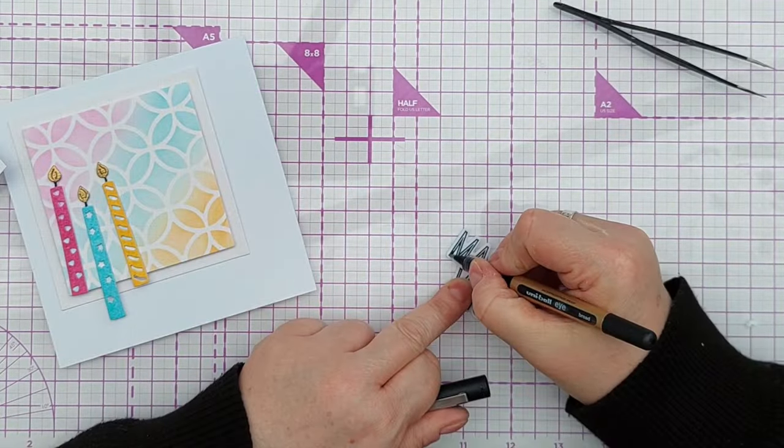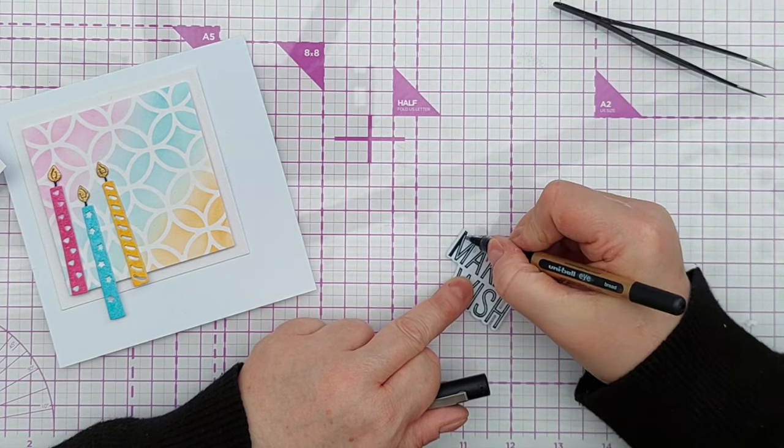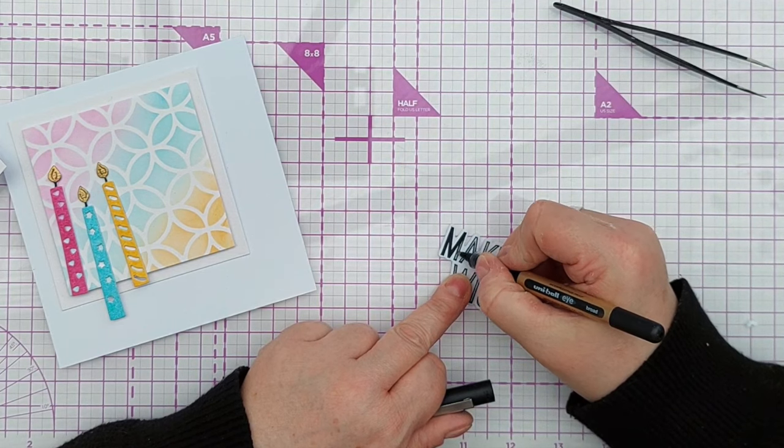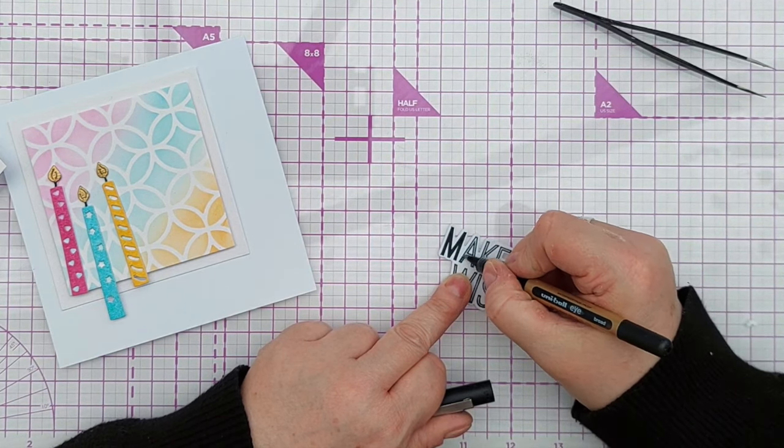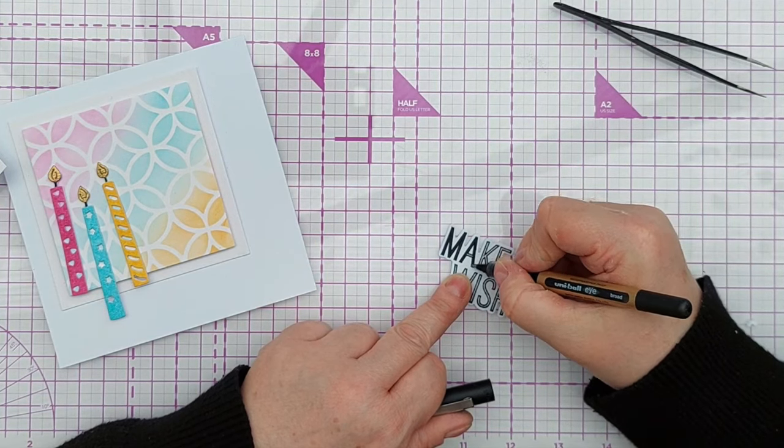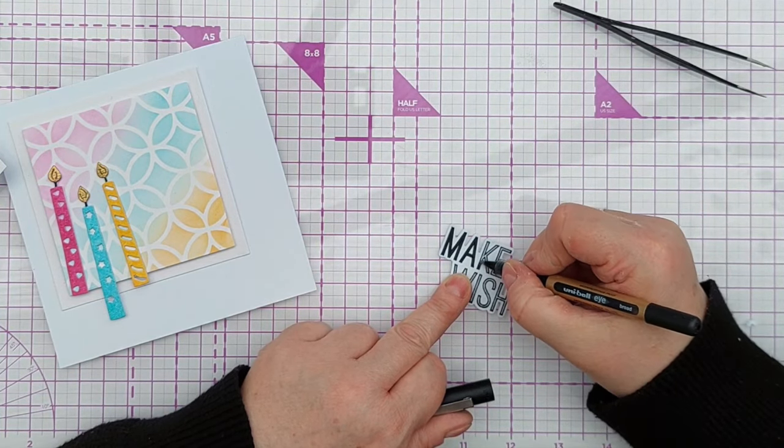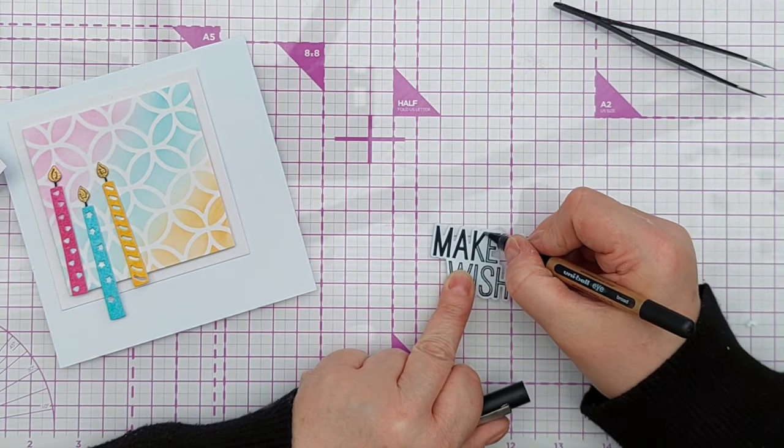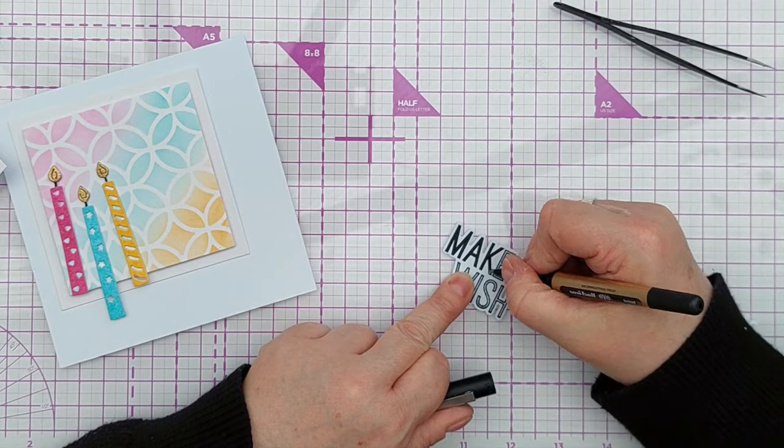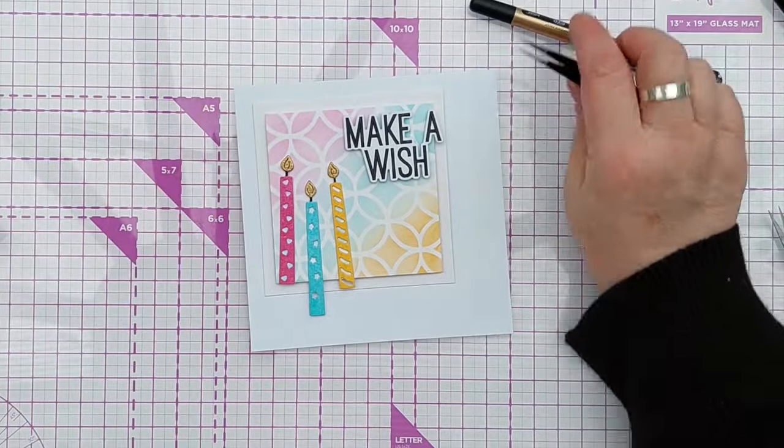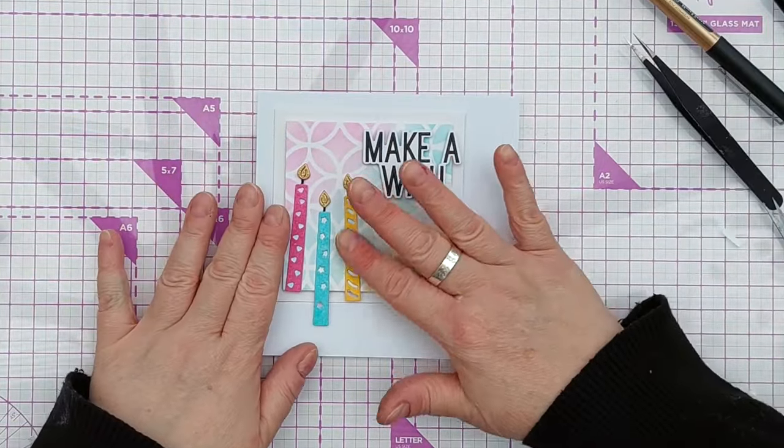For my sentiment, I stamped Make a Wish in black ink on a piece of smooth white cardstock and then die cut it out with its coordinating die. But I didn't feel it had enough punch because the stamp was an outline stamp, so to give it a bit more emphasis, I just filled in the outline with a black pen, and that worked really well.